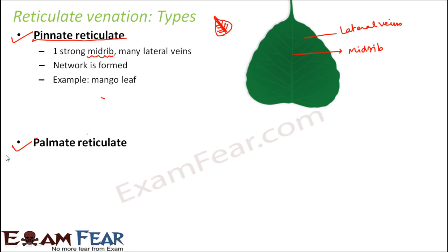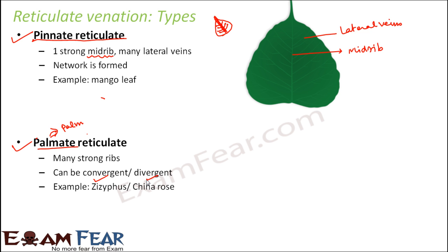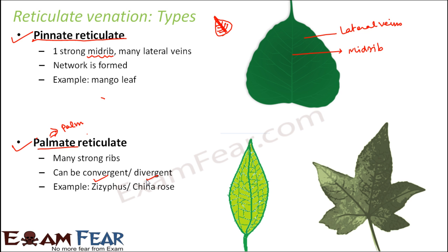The next type is palmate reticulate. The name 'palmate' is derived from the word 'palm.' If you look at your palm, you can see the resemblance. In palmate reticulate there is no single midrib — instead there are many strong ribs. Examples of palmate reticulate include ziziphus and china rose. Looking at those leaves, you can see that there is not a single midrib; this is a strong rib, and this one, and this one — there are many strong ribs.